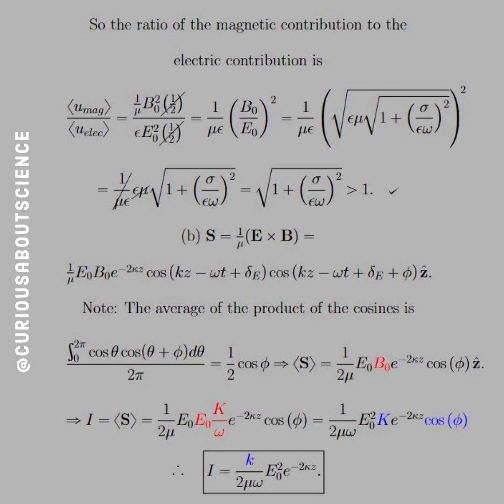All right. So now that we have that, we can use S equal one over mu E cross B and take their cross product here. Clearly that's going to leave a lot of familiar stuff. X and Y give a Z hat. Note that the average of the product of the cosines is equal to one half cosine phi once you integrate it out. So S time average is equal to one over two mu E naught B naught E to the negative two capital Z cosine phi Z hat.